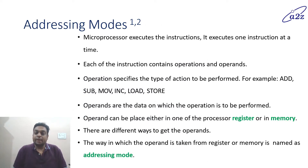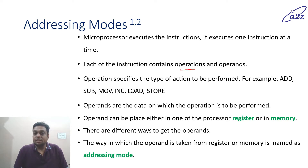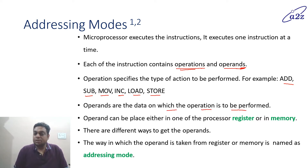As you all are aware, the microprocessor executes one instruction at a time. Each instruction contains operations and operands. Operation is the task which is going to be performed, like add, subtract, move, increment, load and store. Operands can be placed either in the processor register or in the memory — we can store operands in the processor register or in the memory.